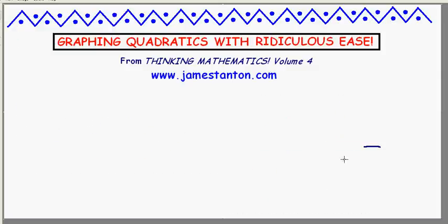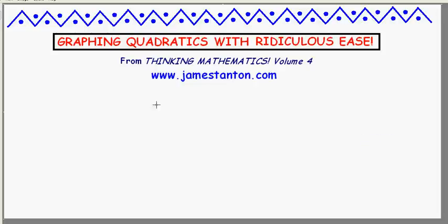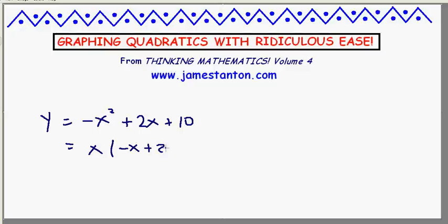Let's do an example of a downward-facing curve. Just to make sure that really is okay as well. Let's sketch, for example, y equals negative x squared plus 2x plus 10. Alright. I'll take out a common factor of x. Negative x plus 2 plus 10. And off we go.